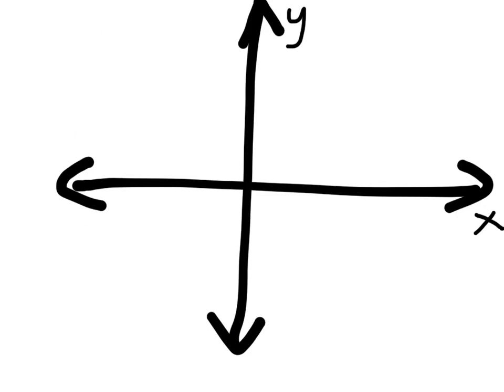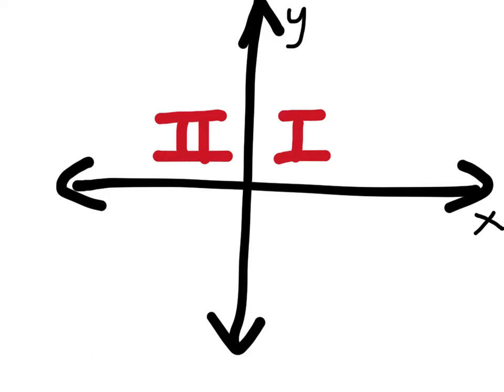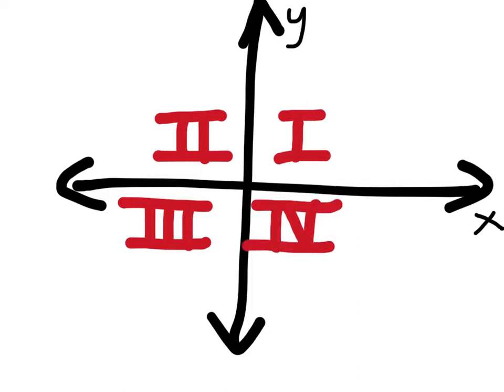They said each of these is a quadrant. Quad means four in Greek — or something like that. This would be quadrant one. The reason why this is quadrant one is because some math nerd somewhere said so, plus both the X values and the Y values are positive. This goes counterclockwise: the next quadrant, quadrant two, is the top left. Quadrant three is the bottom left. Finally, quadrant four is the bottom right — Roman numeral four.